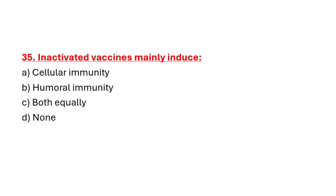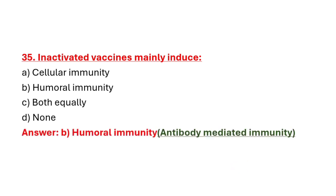Question 35: Inactivated vaccines mainly induce. Option A: Cellular immunity. Option B: Humoral immunity. Option C: Both equally. Option D: None. Correct answer is Option B: Humoral immunity. Antibody-mediated immunity is called humoral immunity.